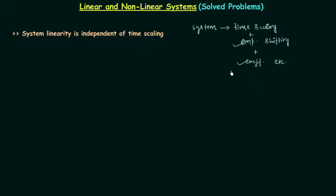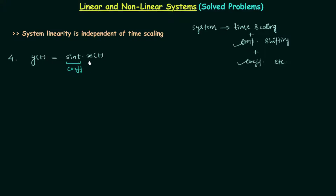In this presentation we will try to find out another important conclusion which is based on multiplication of a coefficient. As we have already solved three problems in the previous lecture, we will start with the fourth problem. In this fourth problem the relationship is y(t) = sin(t) · x(t).